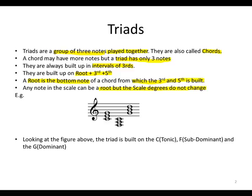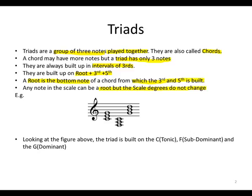Any note in the scale can be a root, but the scale degrees do not change. Let us look at our example. We notice there is no key signature, meaning everything will be in relation to the C major scale. The first triad is built up from C, and a third above that will be E.